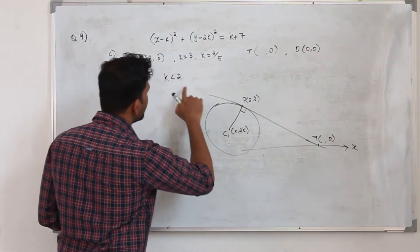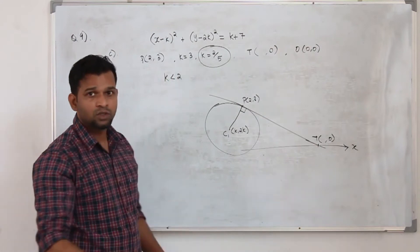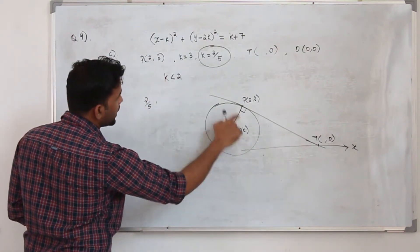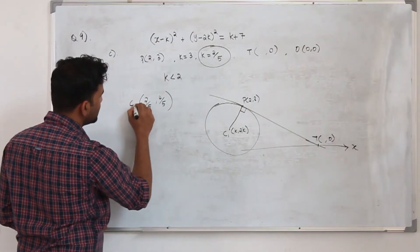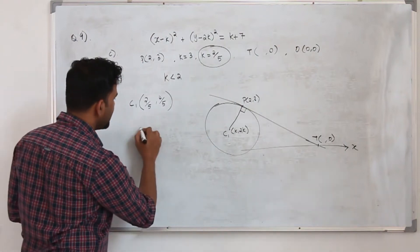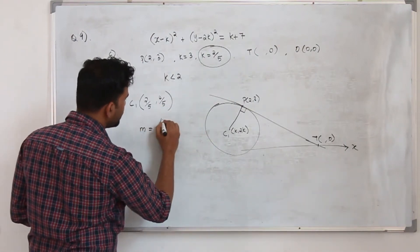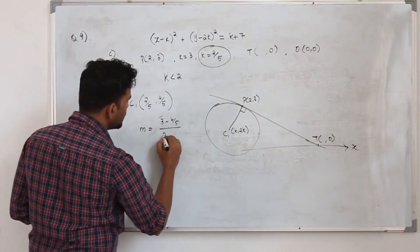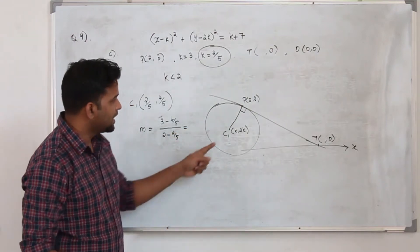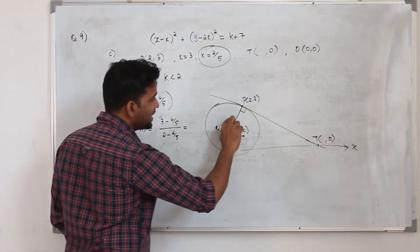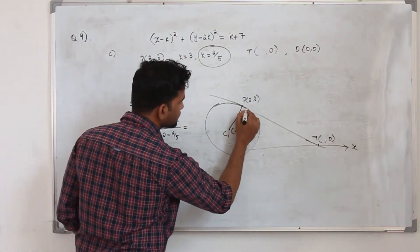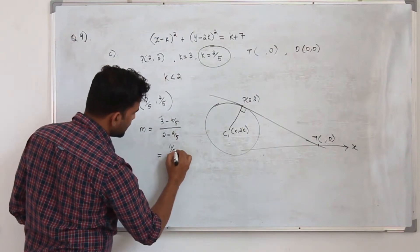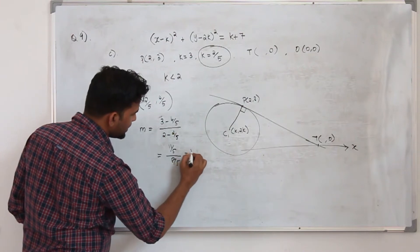We use k equals 2 upon 5, so the center is 2 upon 5 comma 4 upon 5. With point P at 2 comma 3, the gradient of line CP is: y2 minus y1 over x2 minus x1, which is 3 minus 4 upon 5, divided by 2 minus 2 upon 5. That gives 11 upon 5 divided by 8 upon 5, which equals 11 upon 8. That is the gradient of line CP.